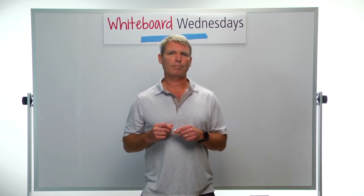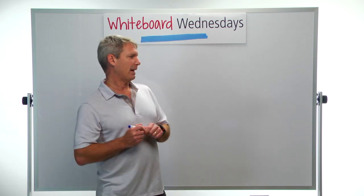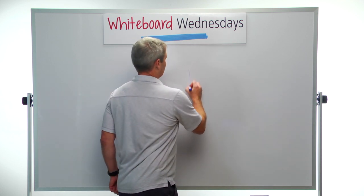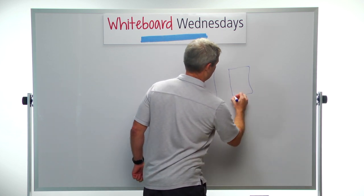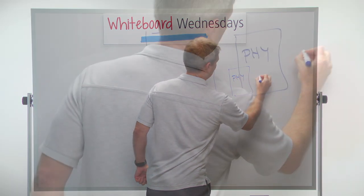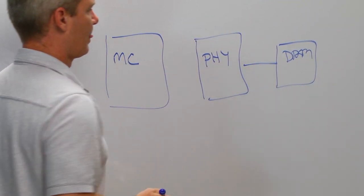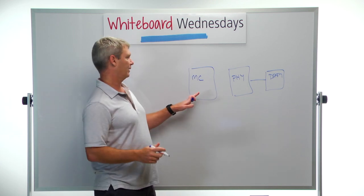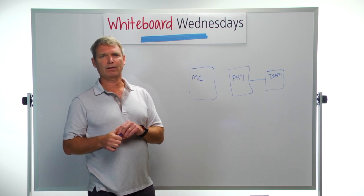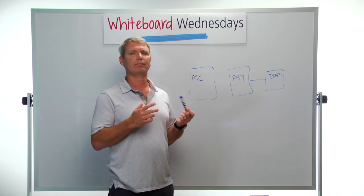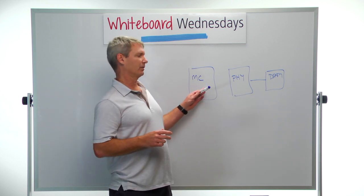While the PHY is an important part of the memory subsystem, it doesn't really have information about how to save power. The memory subsystem consists of a memory controller, a PHY, and the DRAM. The PHY is essentially the physical interface between the memory controller and the DRAM, so while it plays an important part, it doesn't have information about the state of the memory at any given time or what is happening back in the system. That information is known by the memory controller.